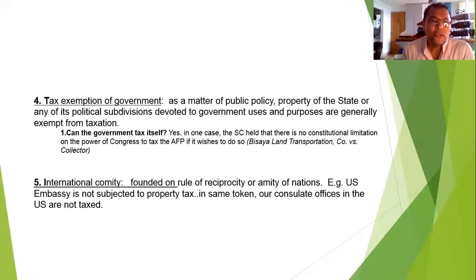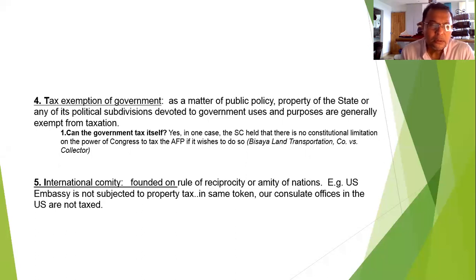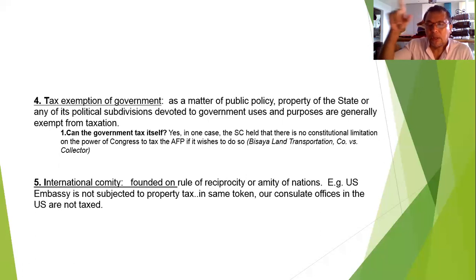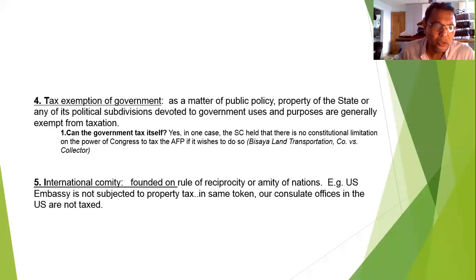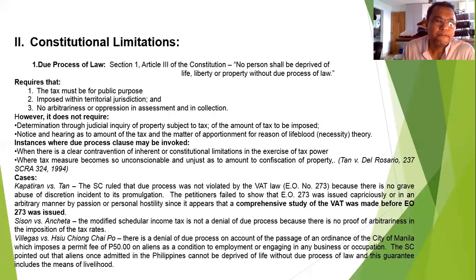The fifth inherent limitation is international comity, founded on the rule of reciprocity or amity of nations. For example, the U.S. Embassy in the Philippines is not subjected to property tax, and in the same token, Philippine consulate offices in the U.S. — in Los Angeles, San Francisco, New York, New Jersey — are also not subjected to property tax. Those are the five inherent limitations on the power of taxation.